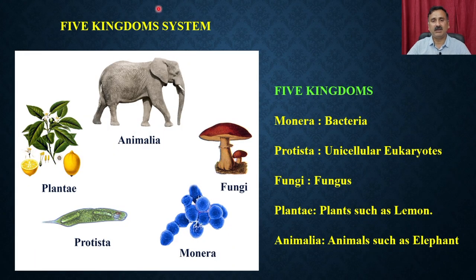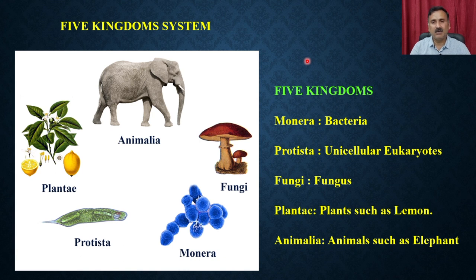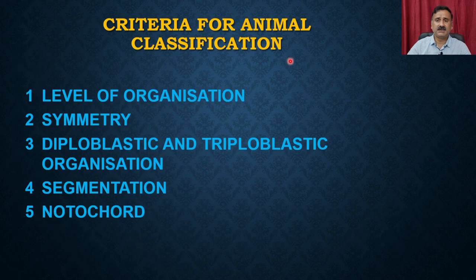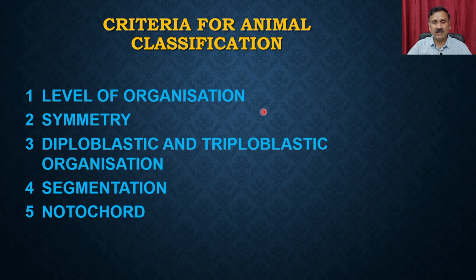Once we understood the living organism and biology, we moved on to ask how we can classify different types of organisms. There was a proposal about the five kingdom system. In the five kingdom system, we have five different kingdoms: Monera, Protista, Fungi, Plantae, and Animalia. How organisms are classified into these five kingdoms is based on differences or similarities among different types of organisms.